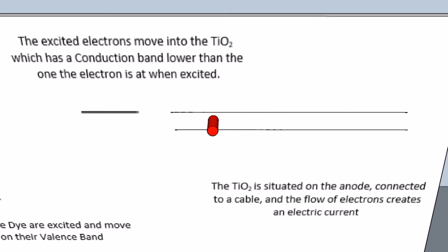The titanium dioxide surface is connected to an external charging circuit and the electrons now follow this circuit generating an electrical current.